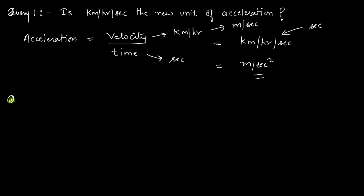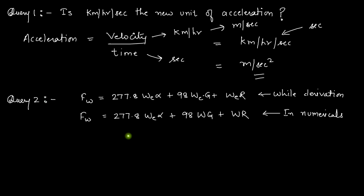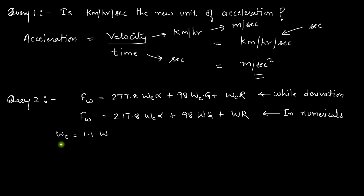The second query was asked by Shubham. He said: during derivation I get the expression that Fw, the tractive force, equals 277.8 We·α plus 98·W·G plus W·r, where We is the effective weight, but during numericals I used W instead of We in the gradient and resistance terms. We is equal to 1.1 times W, and We comes into play whenever the locomotive is accelerating.